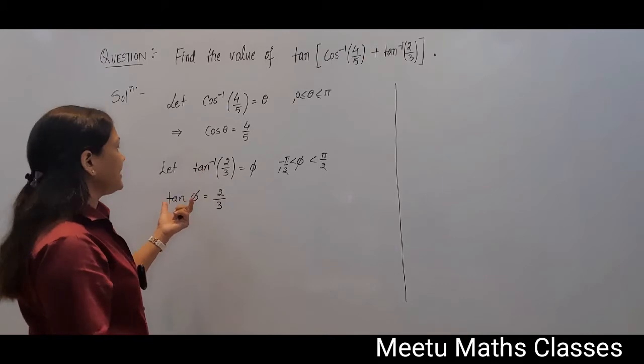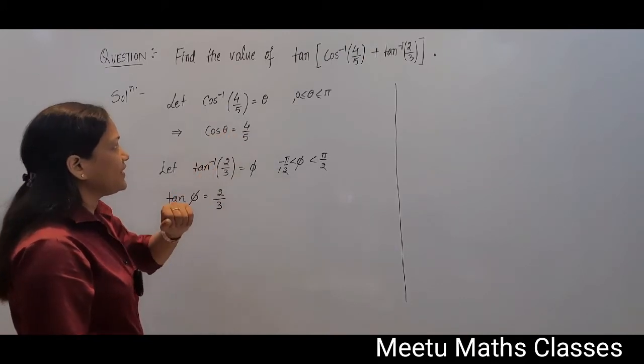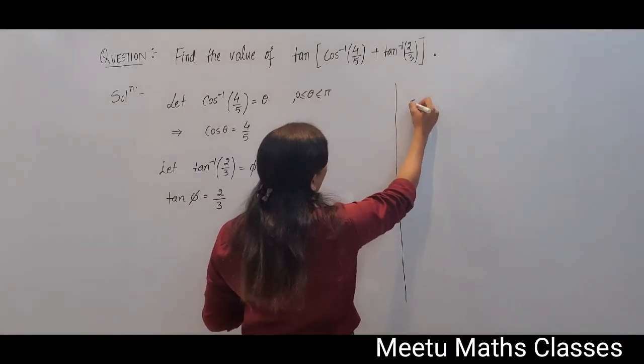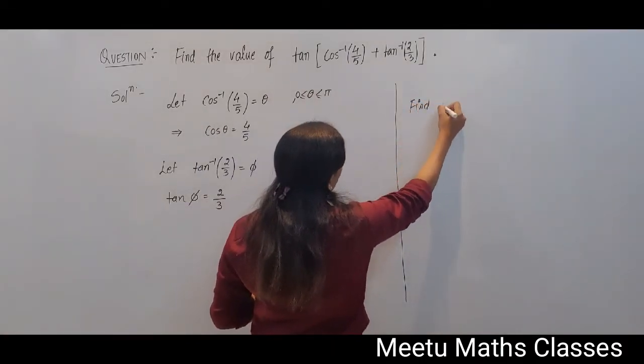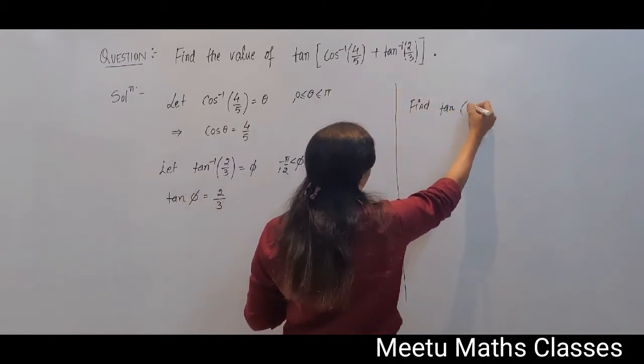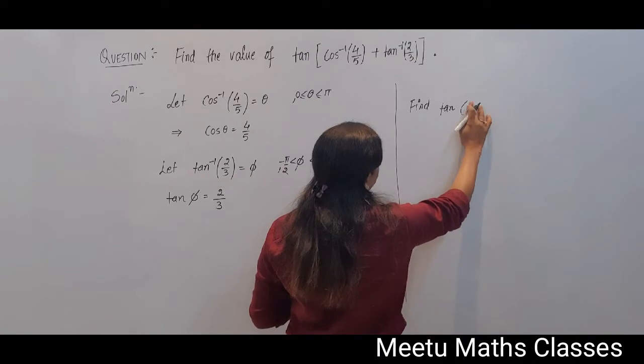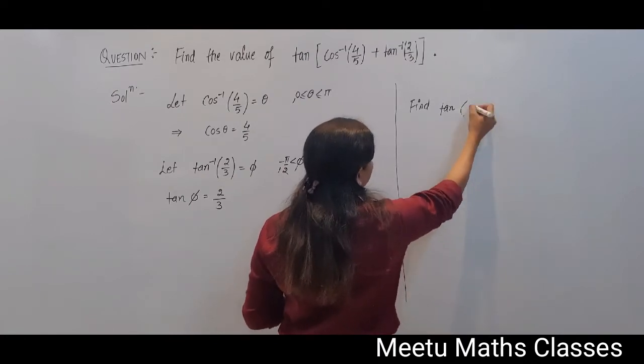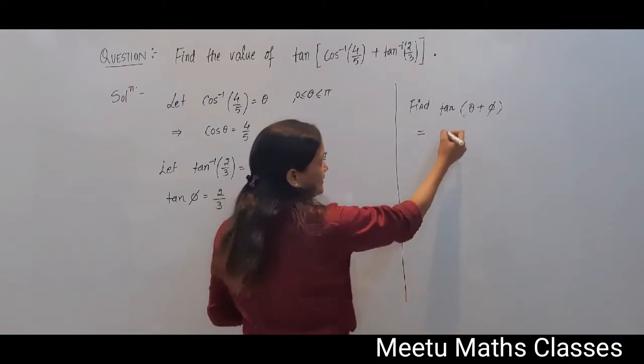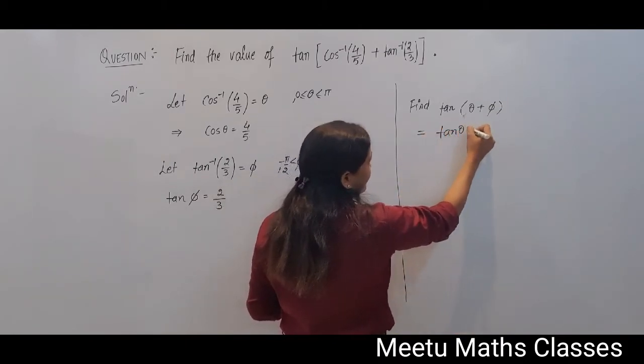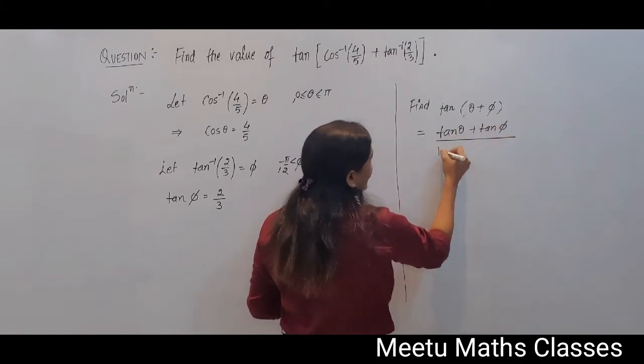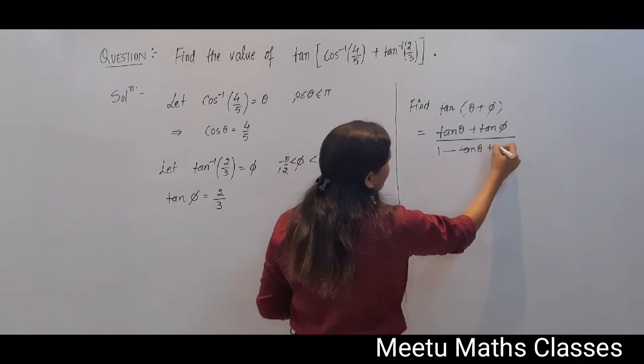Aapke paas tan of phi ki value a gai and cos of theta ki value a gai. Now what you are supposed to find out, you have to find tan of theta plus phi. And tan of a plus b equals tan a plus tan b upon 1 minus tan a into tan b.